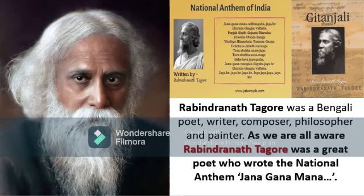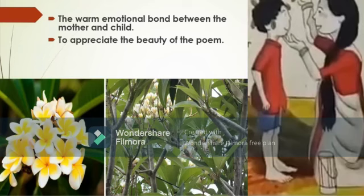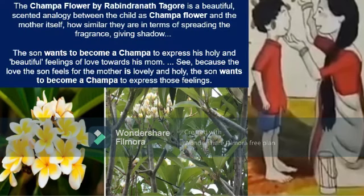Rabindranath Tagore was a Bengali poet, writer, composer, philosopher and painter. As we are all aware, Rabindranath Tagore was a great poet who wrote the national anthem, Jana Gana Mana. This poem shows the emotional bond between the mother and child. The Champa Flower by Rabindranath Tagore is a beautiful scented analogy between the child and Champa Flower and the mother.